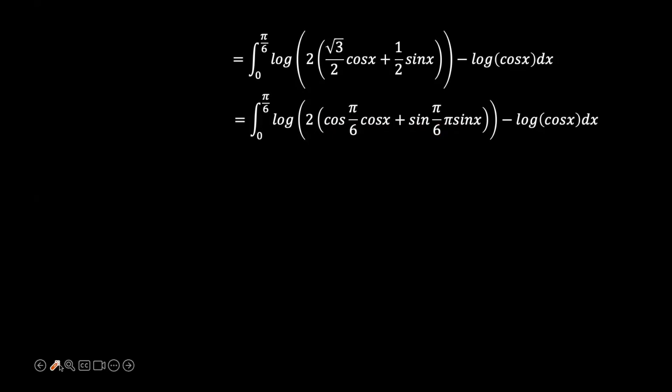So we have a mistake there. And what I'm going to do is make sure this is not part of the deal. That was a typing mistake. So that means now we have 2 cosine x minus pi over 6, all under log minus log of cosine x.